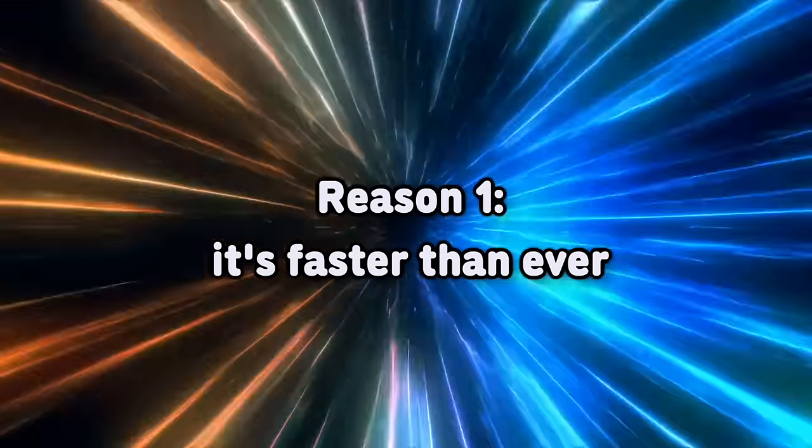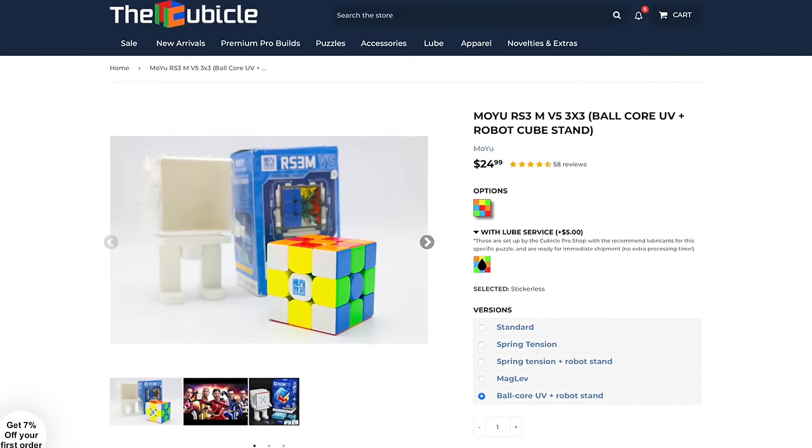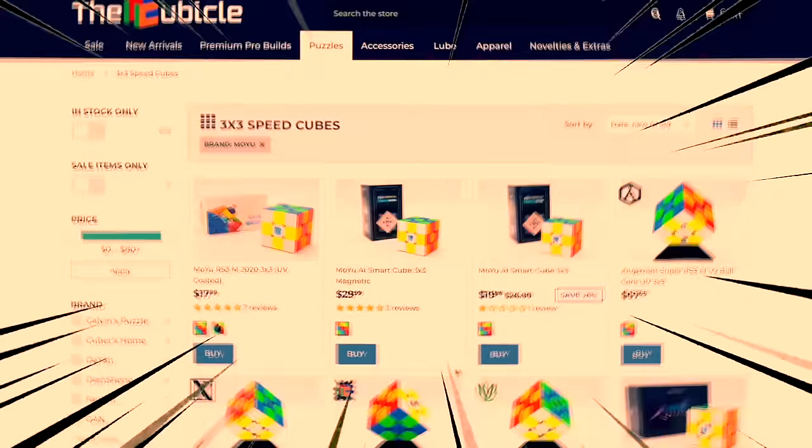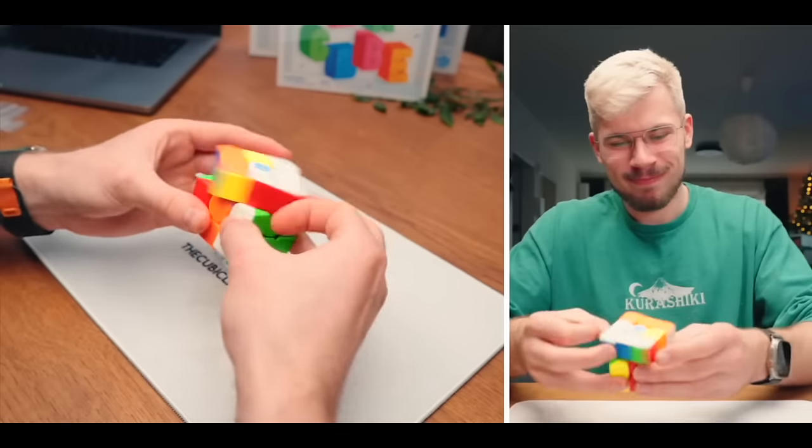We focused a lot on speed. The base model of the Yoke Cube version 2 is the Moyu RS3M V5 Ball Core Edition. It is one of the 6,000 releases that Moyu did last year. But this cube is particularly fast out of the box.